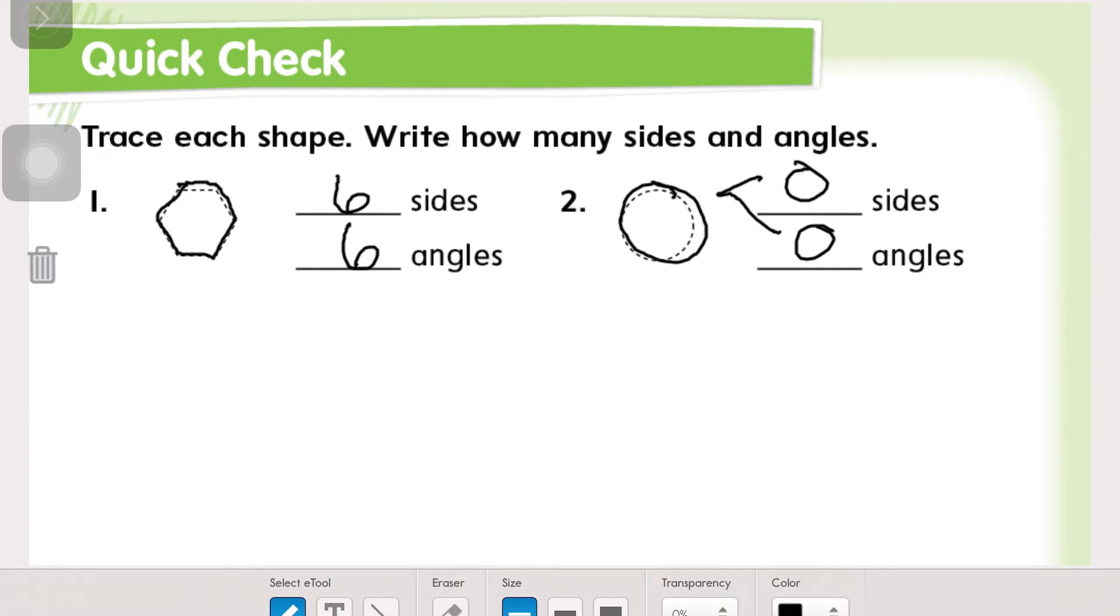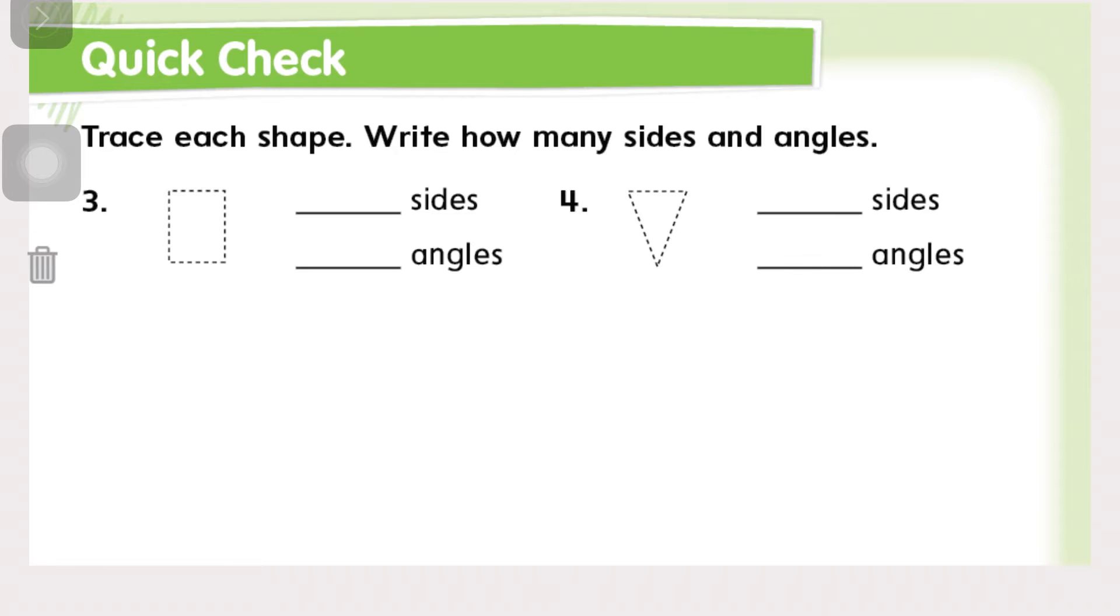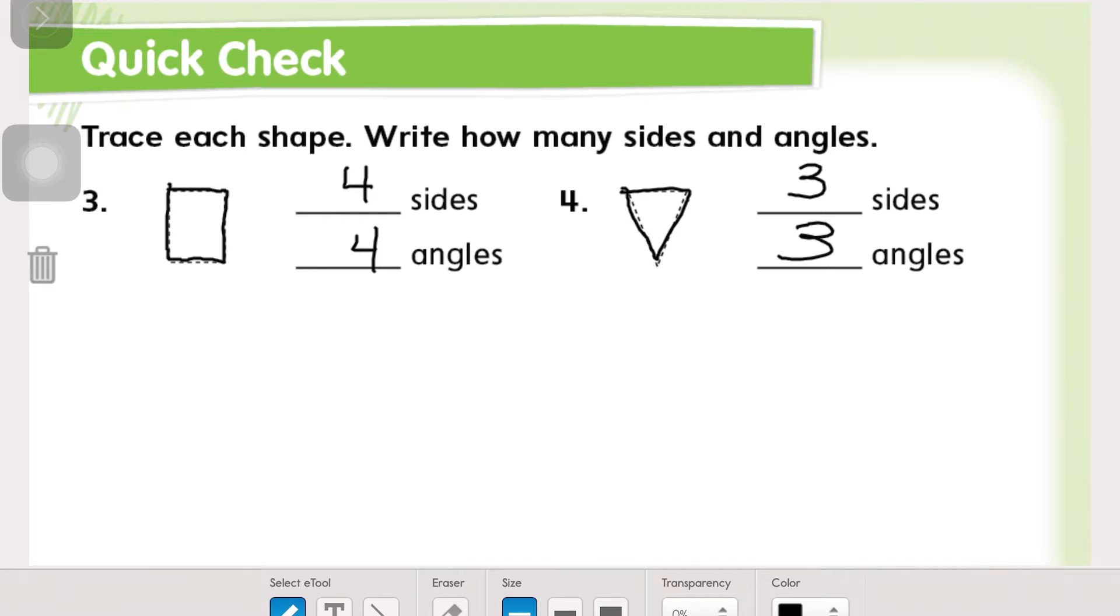Also looks like circles, right? To show that it has zero sides and angles. And then we've got one, two, three, four sides, four angles. One, two, three sides, three angles.